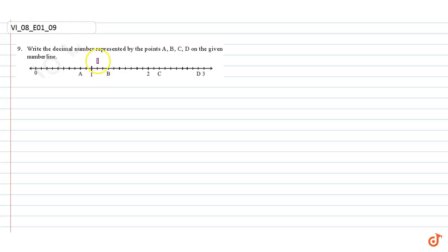In this question, write the decimal number represented by the points A, B, C, D on the given number line.